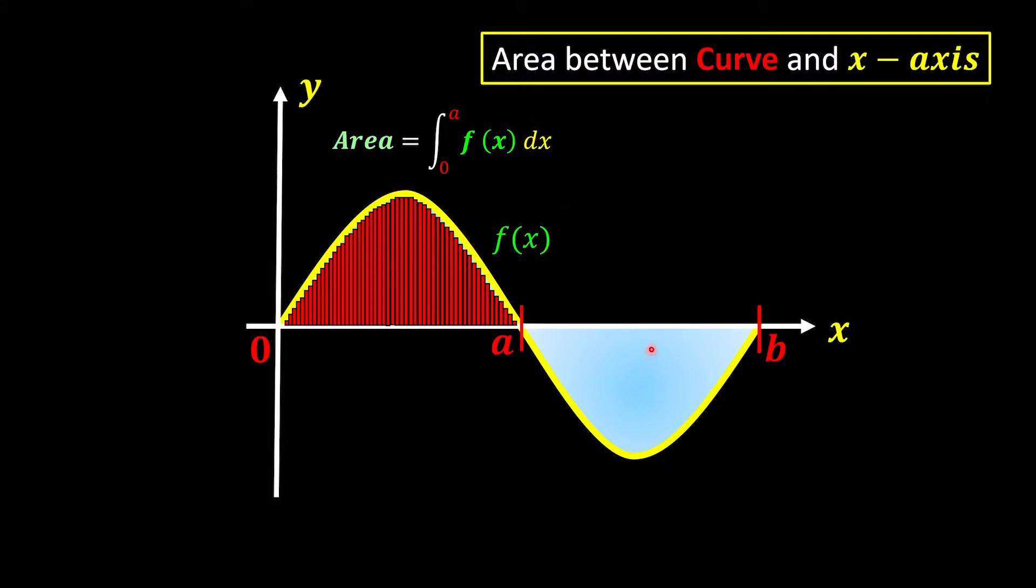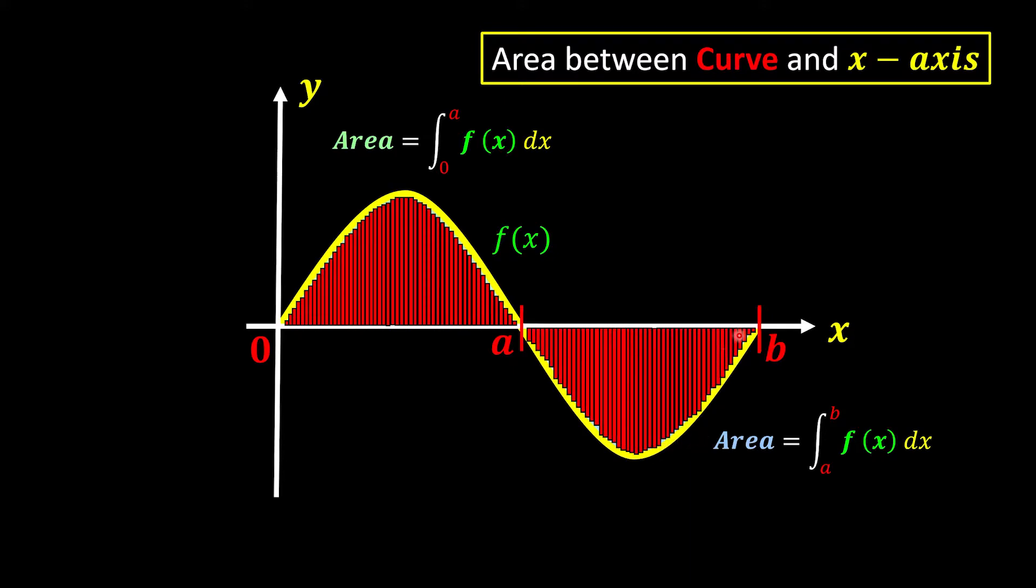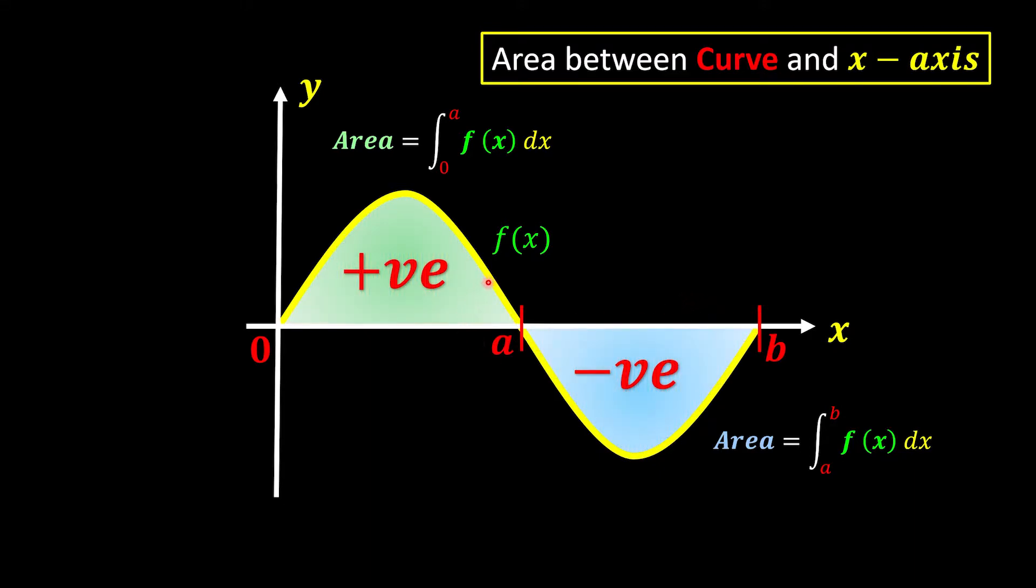Meanwhile, for the blue color regions, we can write down as the integration of the functions from a to b with respect to x because we're going to cut the area under the curve with a lot of rectangles that is bounded to the x-axis. Since we bound to the x-axis, the area of the regions above the x-axis will always be positive. Meanwhile, the area below the x-axis will always be negative.